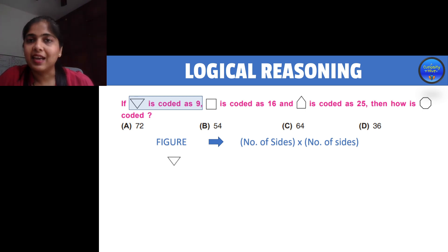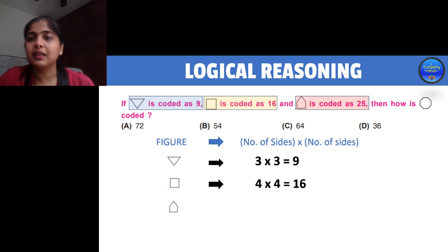The first coding relationship says the triangle is coded as 9. The triangle has three sides and 3 times 3 is 9. Let's look for square, coded as 16. Square has four sides, so 4 times 4 is 16. Next comes pentagon, coded as 25. Pentagon has five sides and 5 times 5 is 25. Hence we know our relationship is correct.